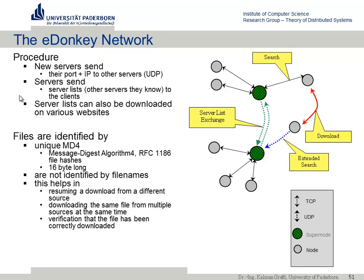eDonkey introduced MD4 hashing to identify files by content. This allowed identifying the same file at multiple locations and enabled parallel downloads — downloading part 1 from node A and part 2 from node B simultaneously. After completing the download, you could verify correctness by recomputing the MD4 hash. The search was sophisticated: you could define keywords like album names and singer names for MP3 files. Queries were sent to your server via TCP, or to other servers via UDP.